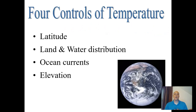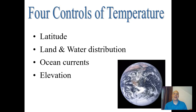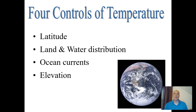Now let's go more in-depth on what controls temperatures in weather. There are four main factors: latitude, land and water distribution, ocean currents, and elevation. These four factors determine the temperatures at any one point on the Earth's surface.